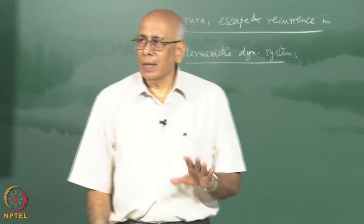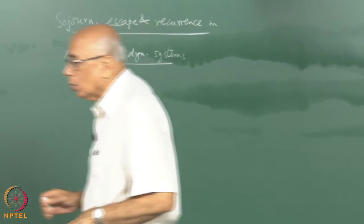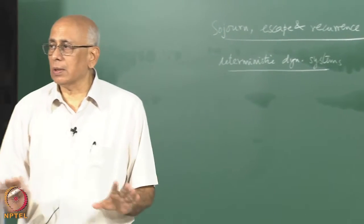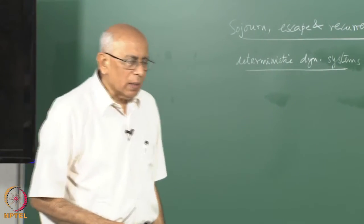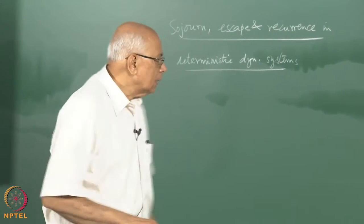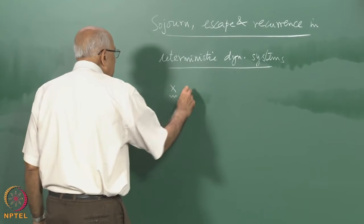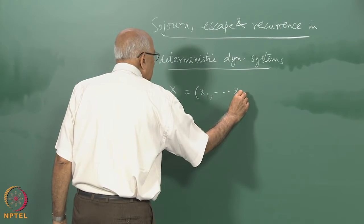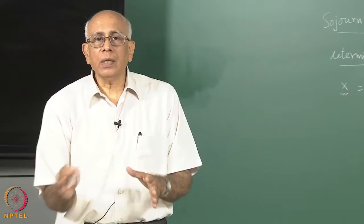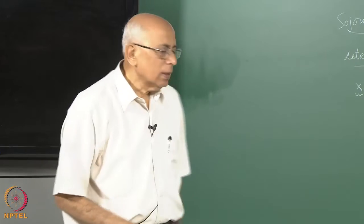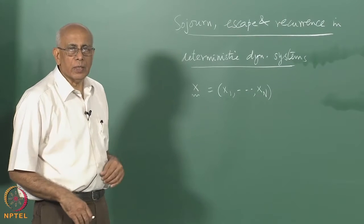We are going to talk about classical dynamical systems for which the rule of evolution is specified. There is no randomness, no externally imposed randomness, no thermal fluctuations, quantum fluctuations, or any sources of fluctuations — completely deterministic dynamical systems. The kind of systems we have in mind are either in discrete time or in continuous time. Specifically, if you have dynamical variables x, which stand for x₁ up to xₙ, in the context of mechanics these could be positions and momenta of various particles, and their evolution in time is given by a set of differential equations.